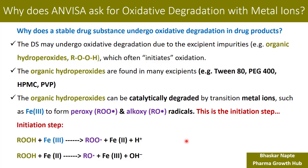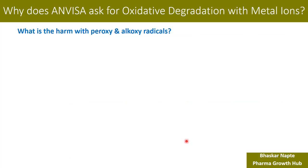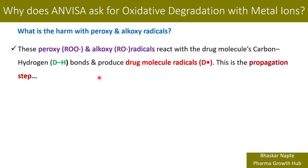Once you get the peroxy and alkoxy radicals, what harm do they bring? These peroxy and alkoxy radicals react with the drug molecule's carbon-hydrogen bond (represented as DH, where D stands for the drug molecule). This produces drug molecule radicals, that is D•. This is the propagation step. So essentially, the peroxy radicals or alkoxy radicals become the reason for generation of drug molecule radicals.